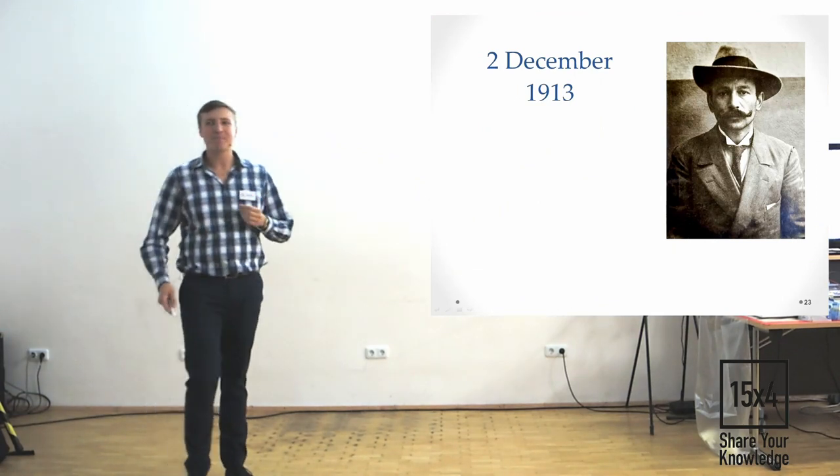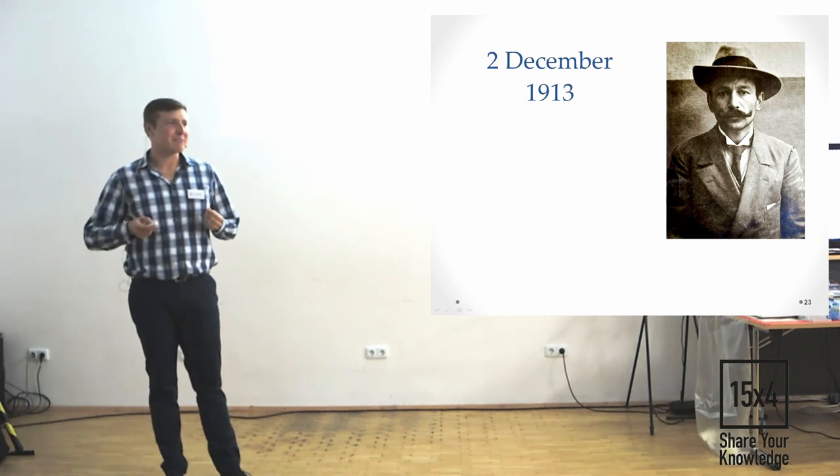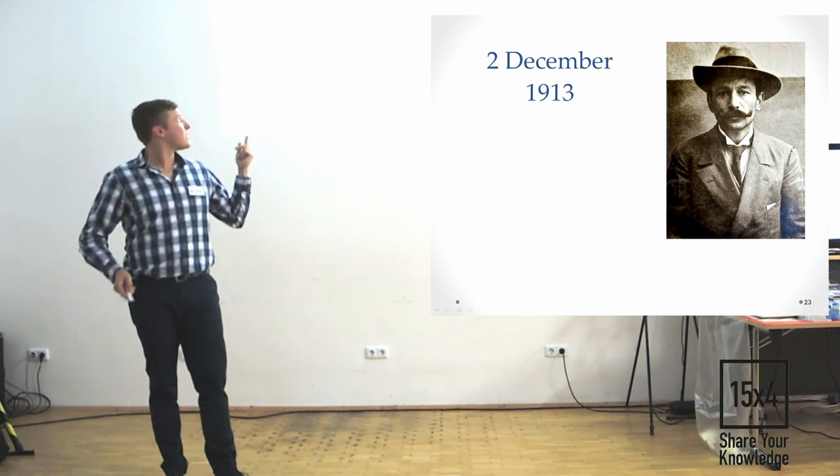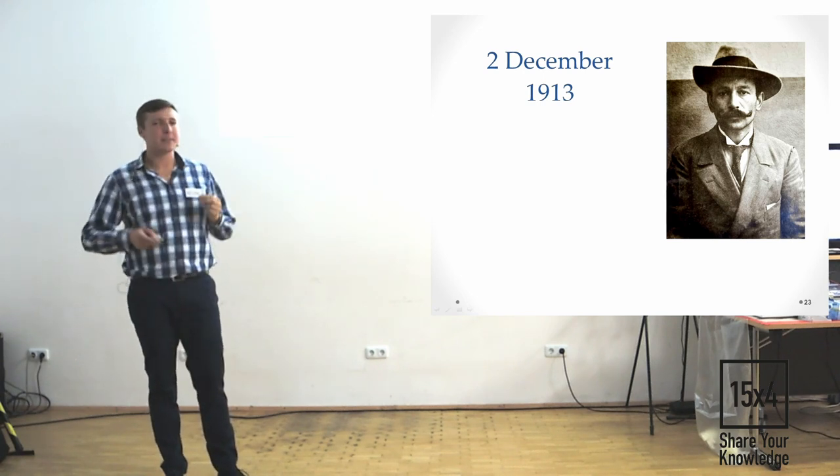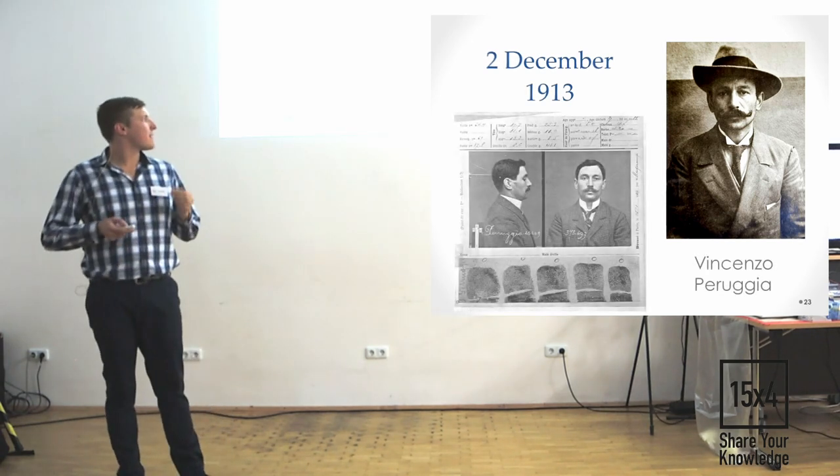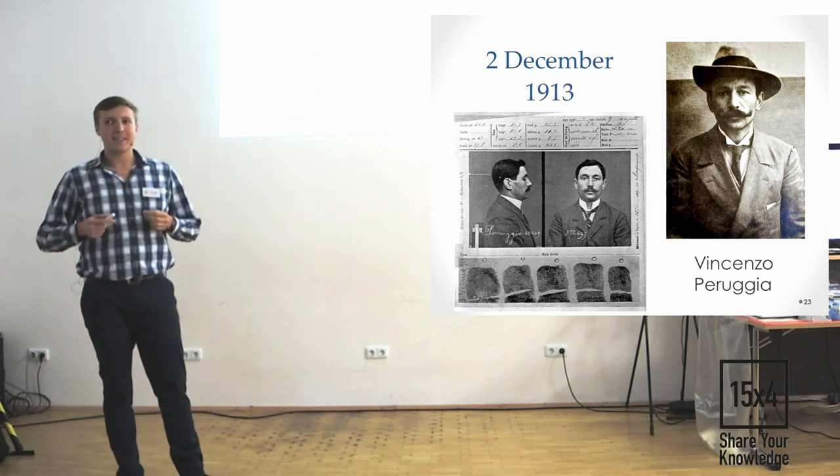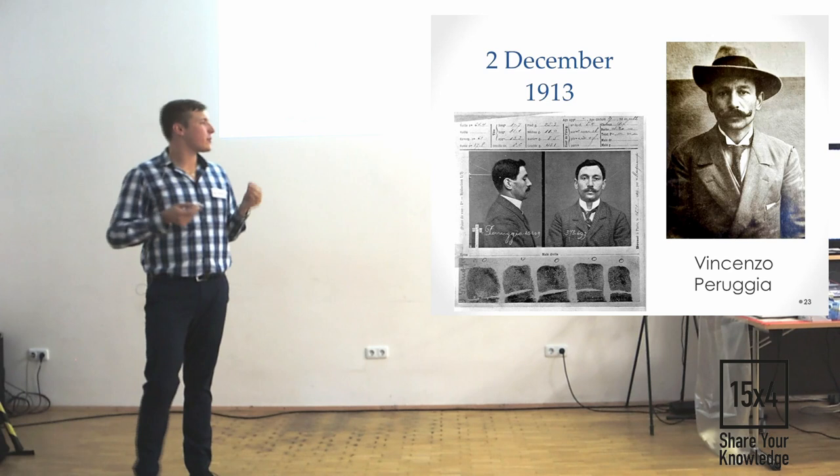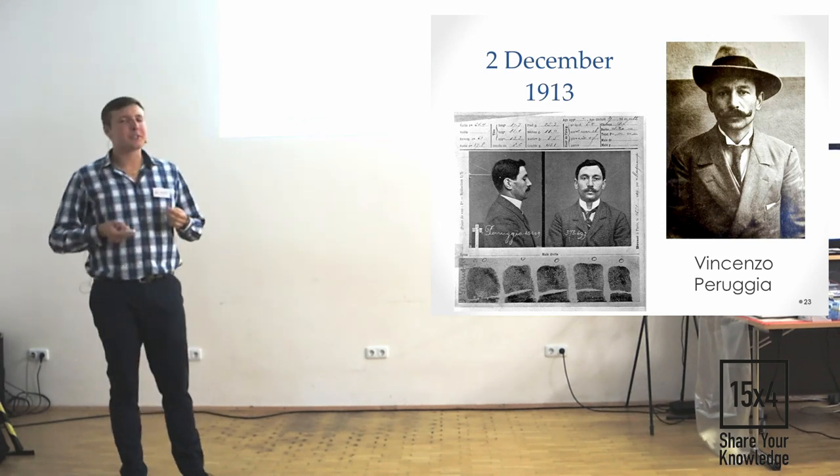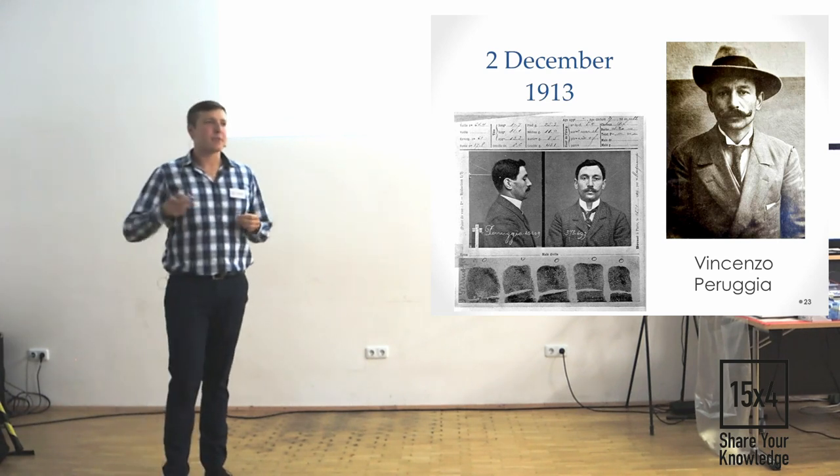2nd December, 1913, police caught somebody who tried to sell Mona Lisa to antiquarian. His fingerprints was the same as fingerprints on the frame. They found his index card in Bertillon's system and it turned out to be a recidivist and thief Vincenzo Perugia. And they had his fingerprints on that card. The crime of the century could be solved in two hours instead of two years. It was a shame for Bertillon and his friends. And in few months they implemented the dactyloscopy in France as well.